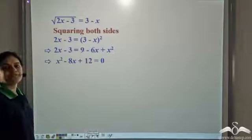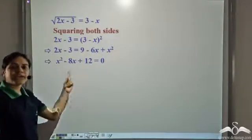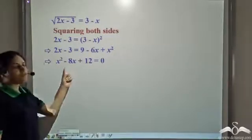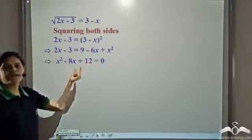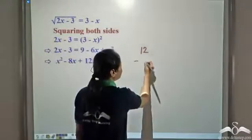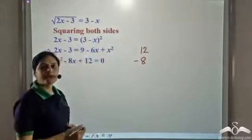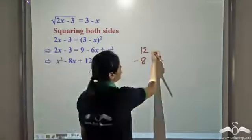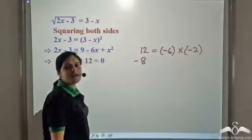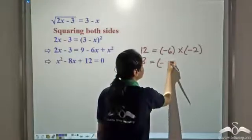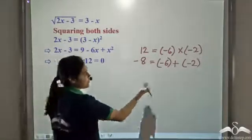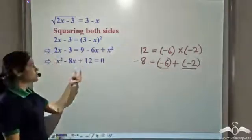This is a quadratic equation in one variable x, so let us solve it using factoring. We need to find two numbers whose product is 12 and sum is negative 8. The product of the numbers should be 12 and the sum should be negative 8. If we consider negative 6 and negative 2, their product is 12 and their sum is negative 8.